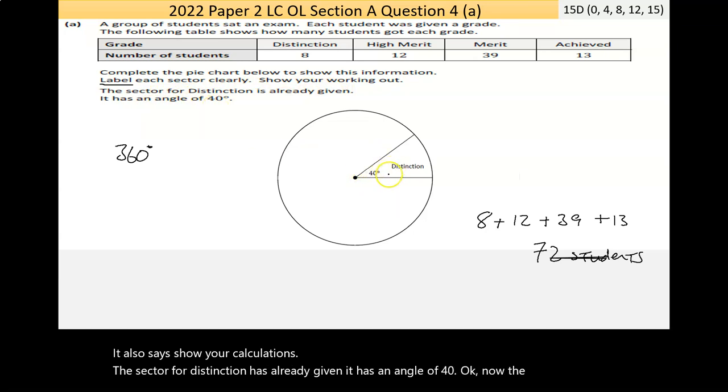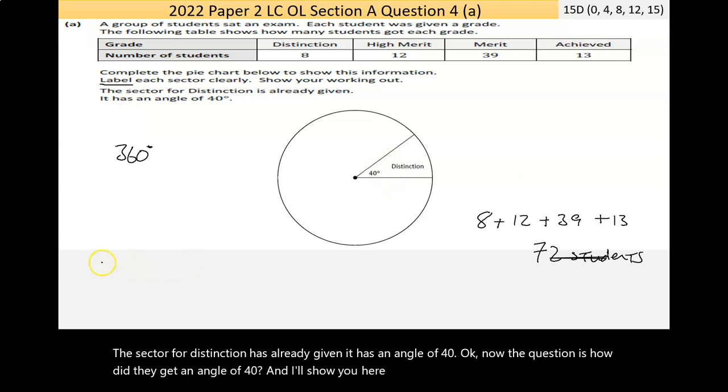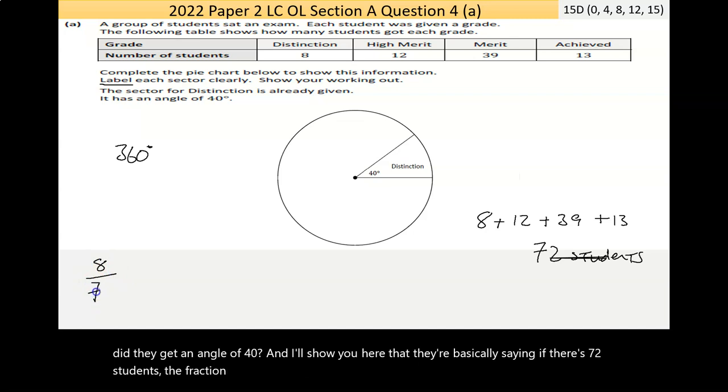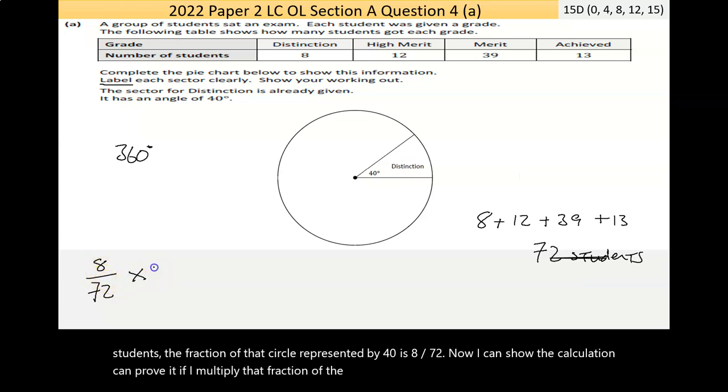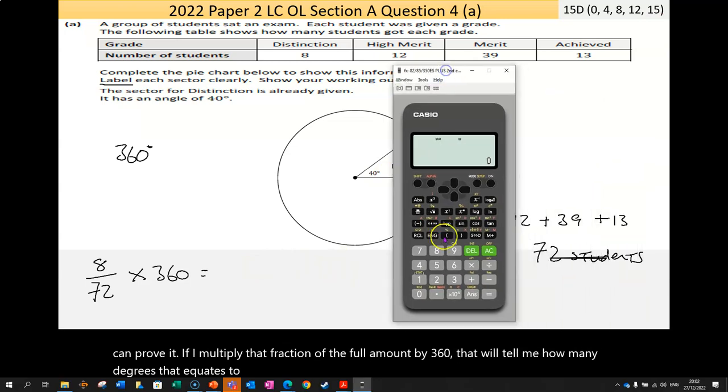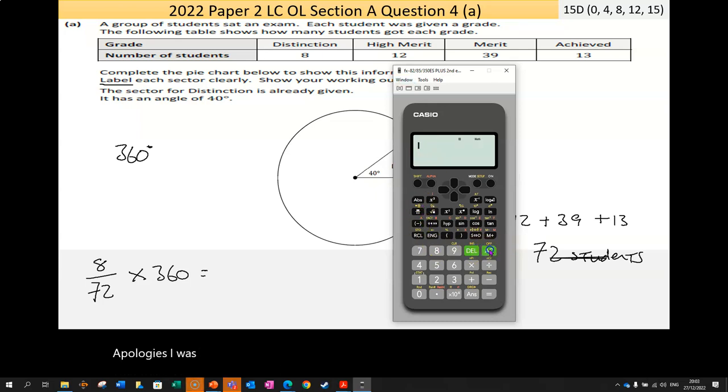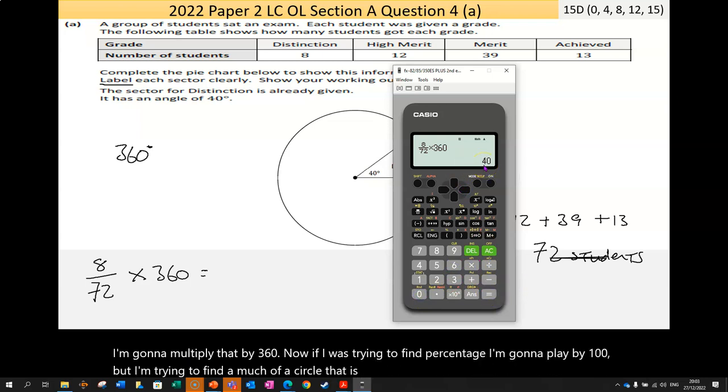How did they get that angle of 40? They're basically saying if there's 72 students, the fraction of that circle represented by distinction is 8 over 72. I can show that calculation. If I multiply that fraction by 360, that will tell me how many degrees that equates to. So the fraction is 8 over 72, and I'm going to multiply that by 360. I was trying to find a percentage, I'd multiply by 100, but I'm trying to find how much of a circle it is, and that gives me the 40.